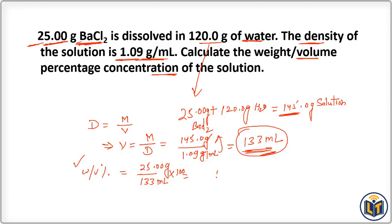Dividing and multiplying by 100 gives us 19 percent. This is how we calculate the weight by volume percent for a solution. First, calculate the volume of the solution using density, then divide the mass of solute by the volume of the solution and multiply by 100.